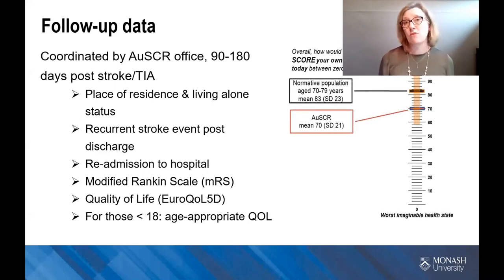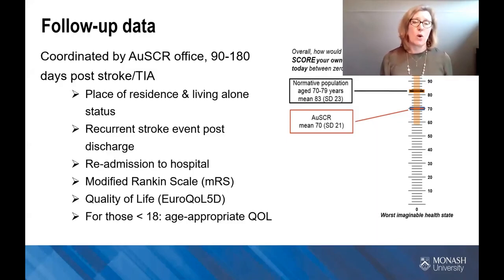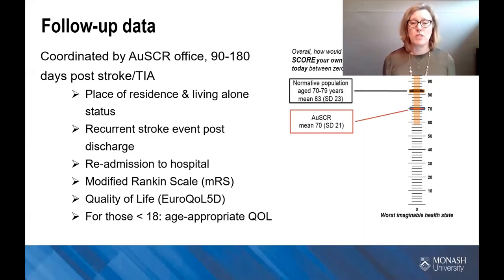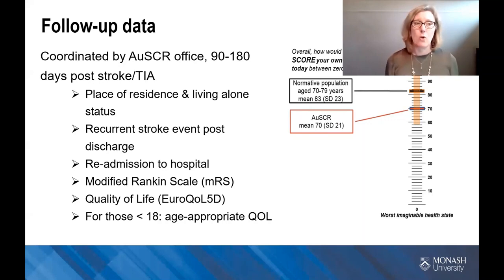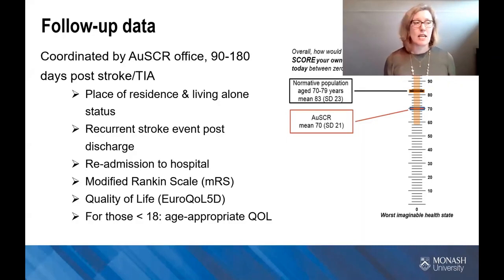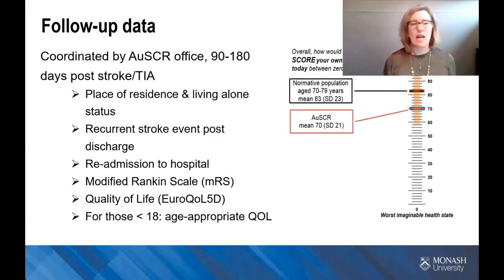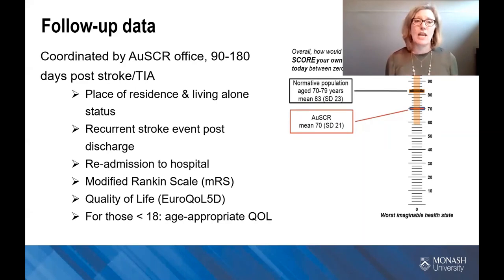The information we collect at follow-up includes place of residence, whether the patient was readmitted into hospital, and we also collect information on their quality of life, which is based on the EQ5D tool, which has got five dimensions, which will be explained later in a number of the presentations. We also collect information on the visual analogue scale — zero is the worst imaginable health status and 100 is the best imaginable health status that the stroke survivors report at 90 to 180 days after their stroke.